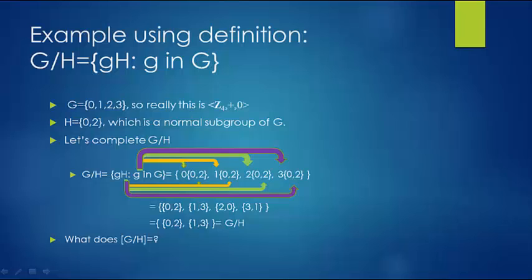Why are there two elements? Because |G| = 4 and |H| = 2, so 4 divided by 2 equals 2. It's not 4 minus 2 — it's 4 divided by 2. And now you can see where the name quotient group comes from: you're dividing it out. That will hold true for all the other examples we work through.